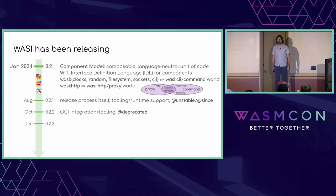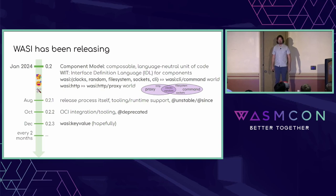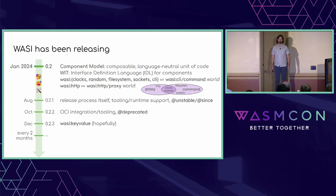In December, we plan to release 0.2.3, and hopefully this will include the WASI key-value proposal, which has had a bunch of work put into it. The pattern here is we have a plan to release every two months with a train model — when features are ready, they go in that release; if not, they can just wait to catch the next train.